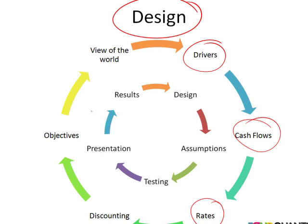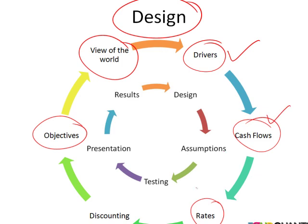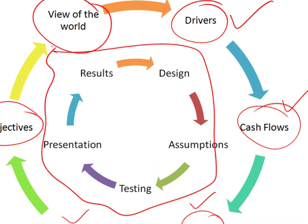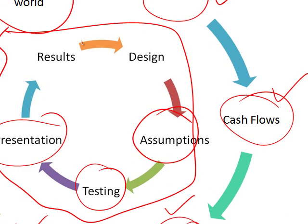Because once the model is built, changing, modifying, or extending that model requires a lot more effort than including the changes you need before the model is built — on a piece of paper you can use to drive the roadmap for your model. So to summarize: great models spend a fair bit of time on design — starting with the objective, determining the relevant views of the world, the drivers that affect that view, the impact of those drivers on cash flows, the relevant discount rates for calculating net present values, and then the core assumptions, how they need to be tested, how to present, and what results to present. If we bring all of these elements together before we build our Excel sheets, our work will be a lot more simple and easy.